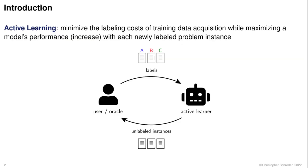Active learning is a human-in-the-loop method for scenarios in which no labeled data is available. The most common setting here is pool-based active learning, in which the active learner, an algorithmic component, selects instances from the pool of unlabeled data that are deemed to be the most informative, according to a so-called query strategy. These instances are then labeled by a human expert and subsequently the active learner trains a new model on all data labeled so far. This process is repeated a certain number of times, and the final result is a small labeled subset for supervised classification.